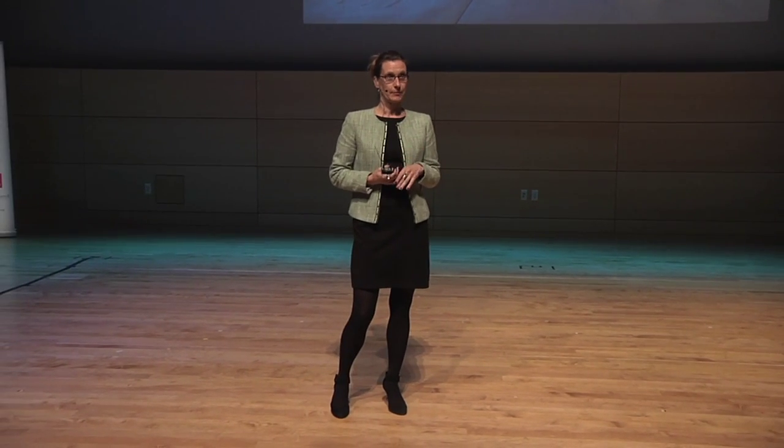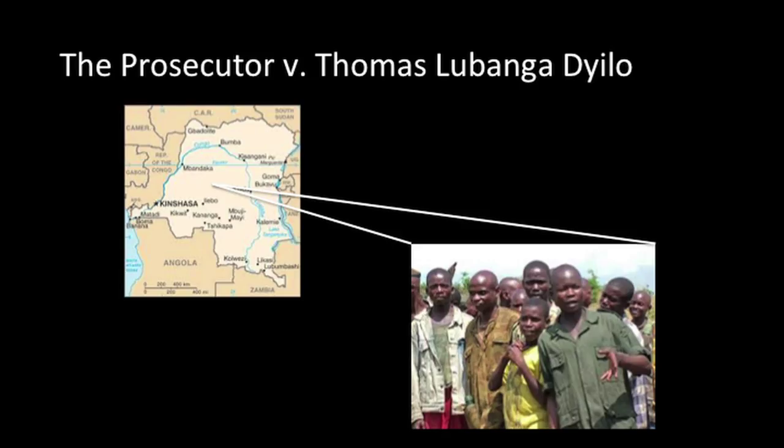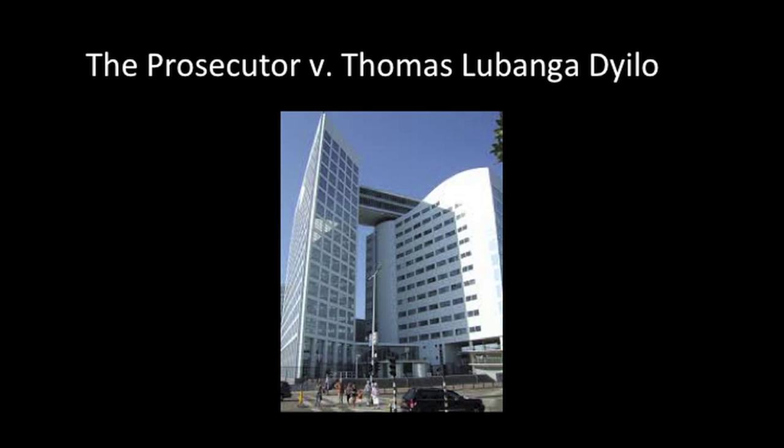Thomas LaBonga was the leader of an armed faction in the Democratic Republic of Congo. He was indicted for the recruitment and use of child soldiers. In his prosecution before the International Criminal Court, the prosecutor introduced a video showing LaBonga giving a speech to a group of young boys at a military training camp. This video demonstrated that LaBonga knew that child soldiers were being used. He was convicted of war crimes and is currently serving a prison sentence.